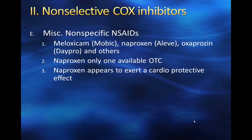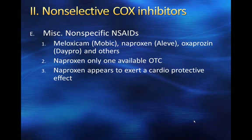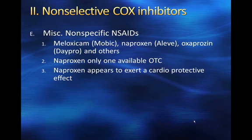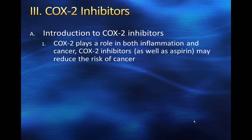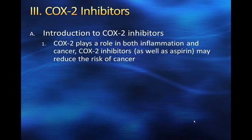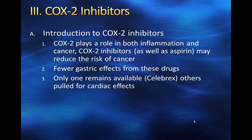One of the issues with the non-selective COX inhibitors is they do have effects on the gastrointestinal system and platelet functioning because of COX-1 inhibition. There have been attempts to introduce COX-2 inhibitors that don't affect COX-1. However, because of the anticoagulant properties of non-selective COX inhibitors, there is some risk of cardiac event with COX-2 inhibitors — it seems to actually have an effect on coagulation in the wrong direction. COX-2 plays a role in both inflammation and cancer, and COX-2 inhibitors, as well as aspirin, may reduce the risk of cancer. There are fewer gastric effects from these drugs, but only one remains available — the others were pulled for their cardiac effects.